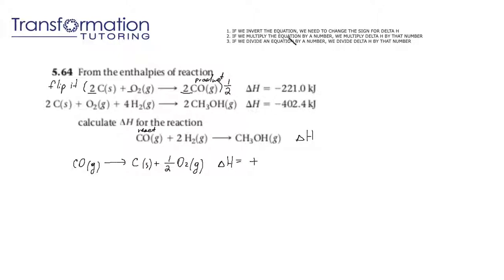Now if we multiply the equation by a number we multiply delta H by that number. If we divide an equation by a number we divide delta H by that number. We multiply the equation by 1 half or divided by 2 whichever is easier for you. So I'm going to do one half of my delta H.